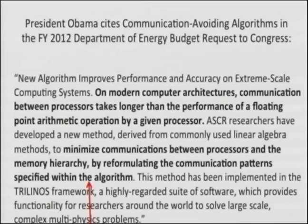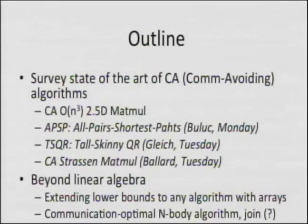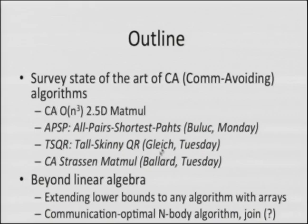Here's the outline of the talk. I'll survey the state of the art in direct linear algebra and go into detail on one particular algorithm — classical n-cubed matrix multiply, which now goes asymptotically faster. Earlier this week we also heard talks on all-pairs shortest path using Floyd-Warshall, tall-skinny QR, and communication-avoiding Strassen, so I'll just refer back to those. Then I'll have a few slides on going beyond linear algebra to anything that accesses arrays, and a one-slide summary of iterative methods.